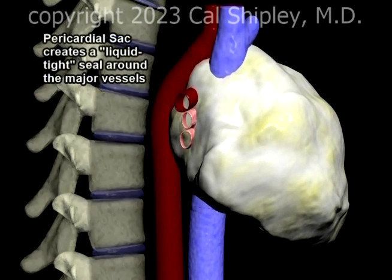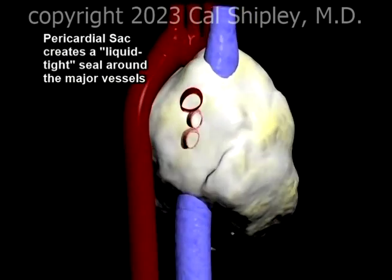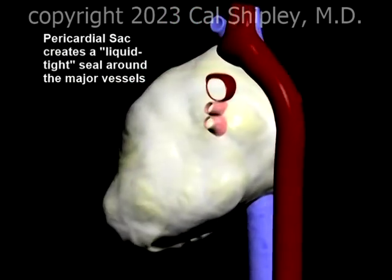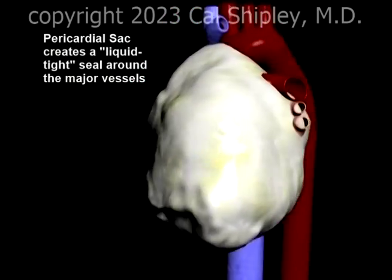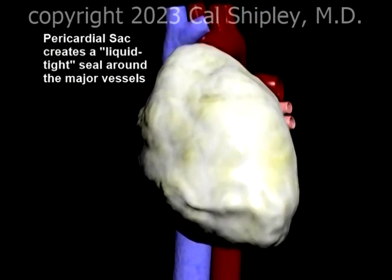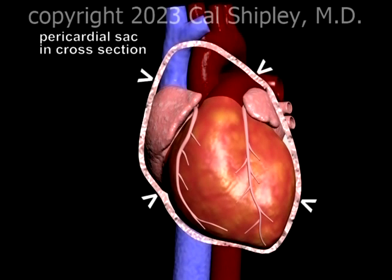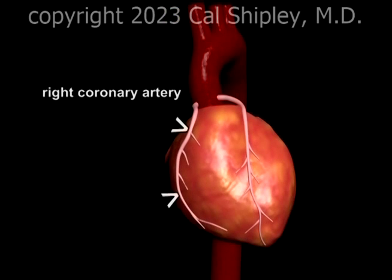The pericardial sac completely encloses the heart, creating a liquid-tight seal at the points of entry of the vena cava and aorta, as well as the other major cardiac vessels. A cross-sectional view of the pericardial sac reveals the heart with the left and right coronary arteries.